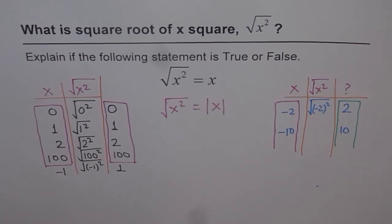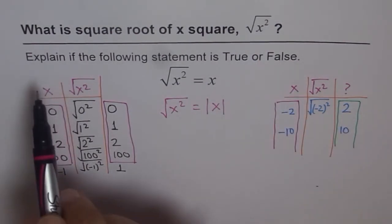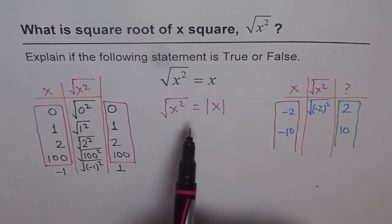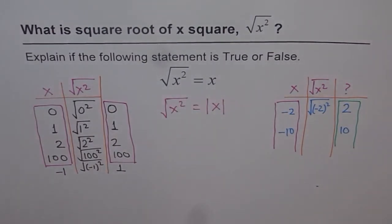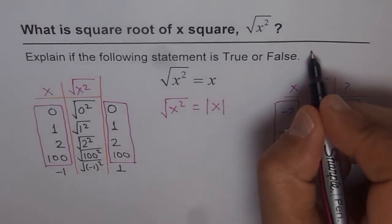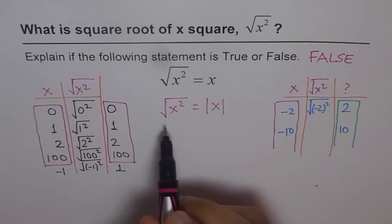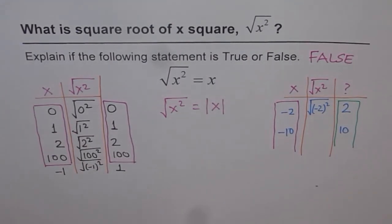That is why square root of x squared is not this. So explain if the following statement is true or false. What do you say? Square root of x squared equals to x is true or false? Well, the answer is false. Do you see that? And the reason is that it is actually equals to absolute x, not just x. I hope this point is well taken and you appreciate it. Thank you.